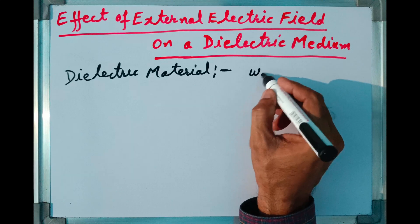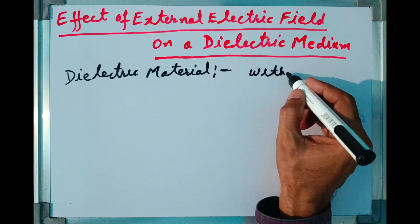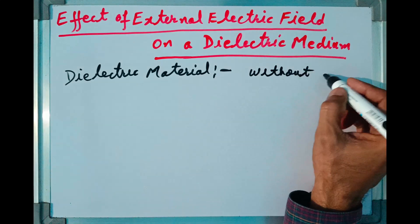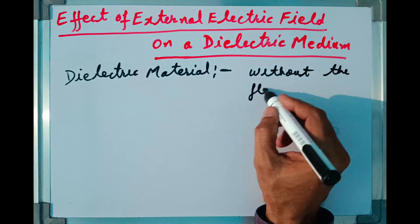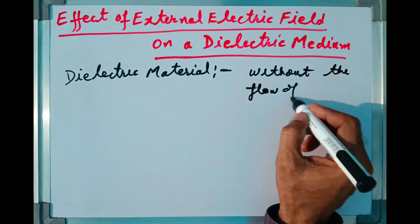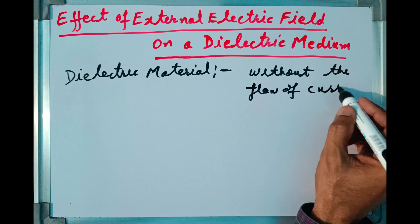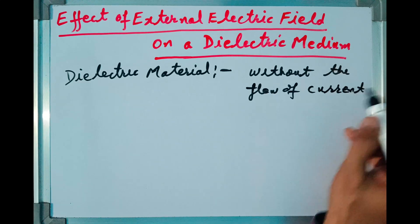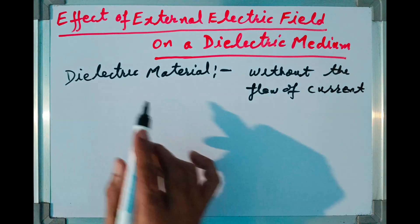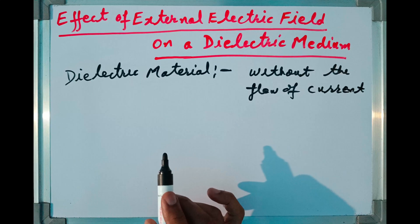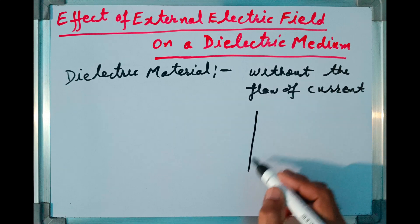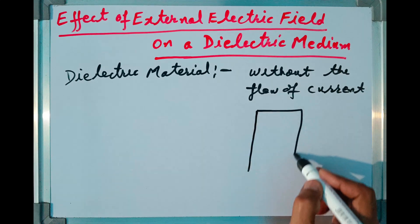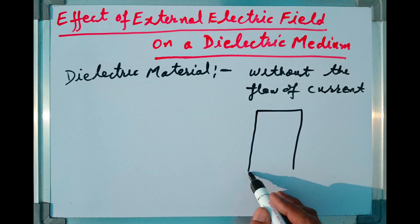These electrostatic effects occur without the flow of any current. Now we have to see what electrostatic effects take place on the dielectric material. For that purpose, let me consider a slab made of some dielectric medium.